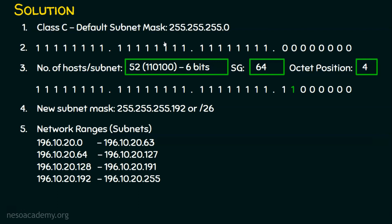With a class C subnet mask of 255.255.255.0, all these IP addresses belong to a single network because it checks only the first three octets. Since all addresses start with 196.10.20, they are in the same network under that mask. But with the new subnet mask 255.255.255.192, they are not in the same network — we have generated a classless subnet mask.